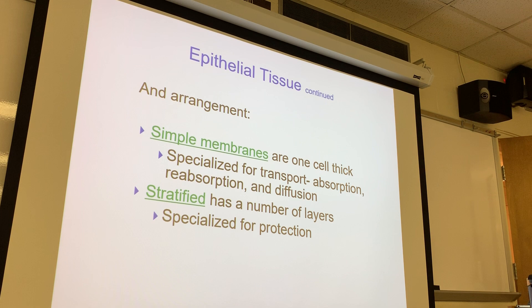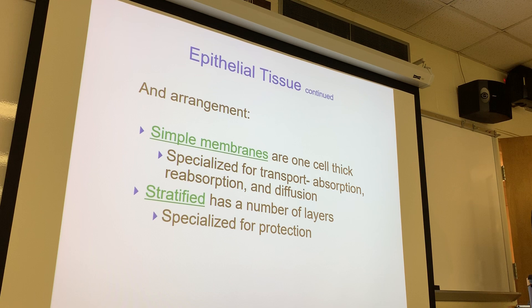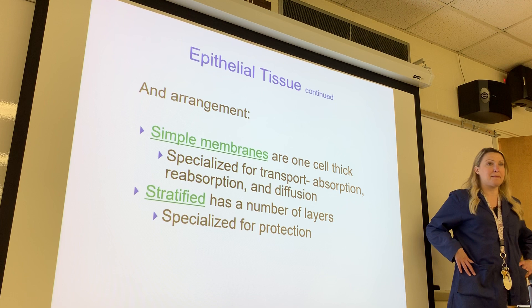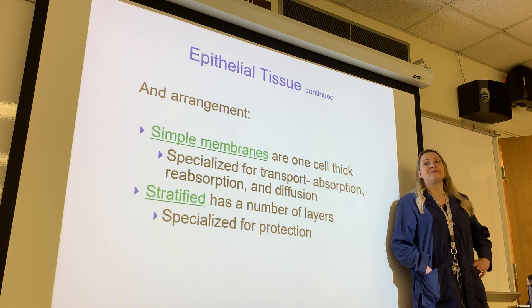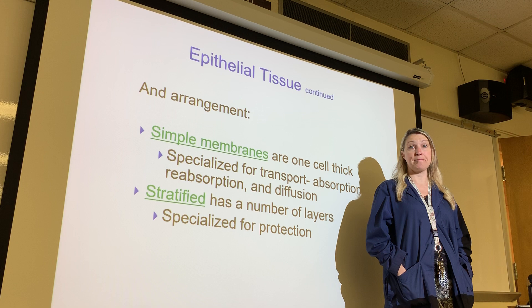There's a third arrangement: pseudostratified, which means it looks layered but is not — it's a false layered appearance. Pseudostratified columnar epithelium with cilia is found in the upper respiratory tract, like the trachea.